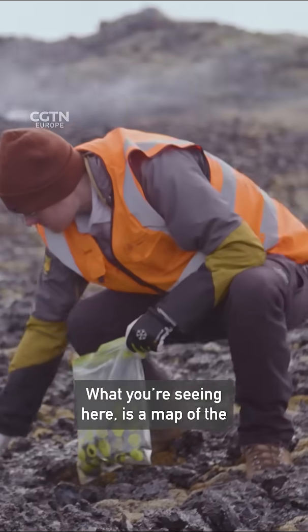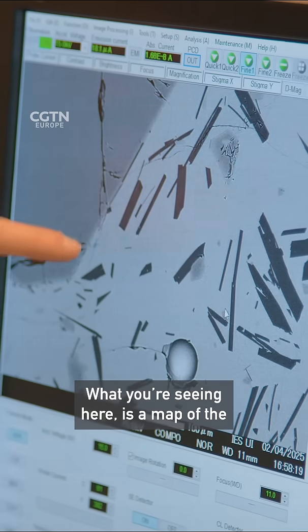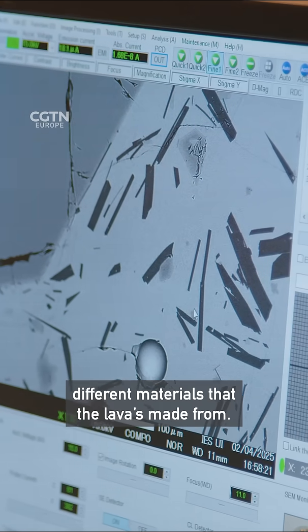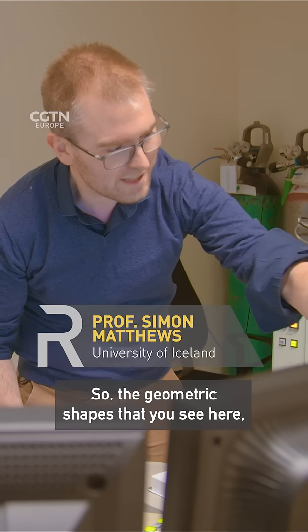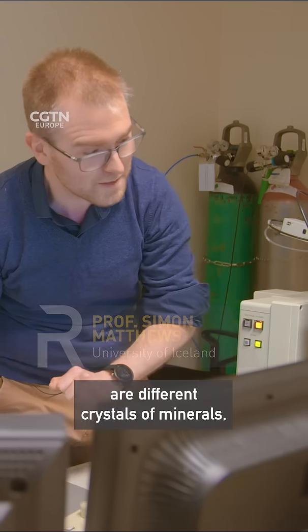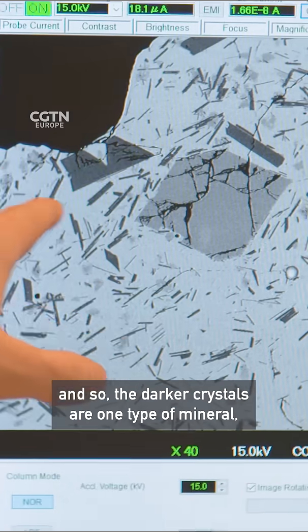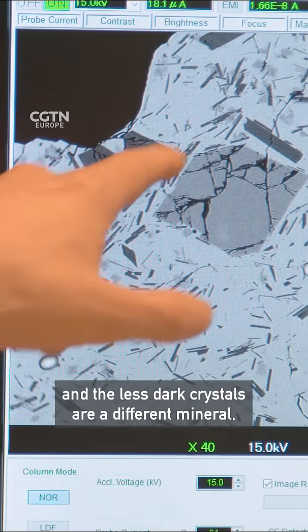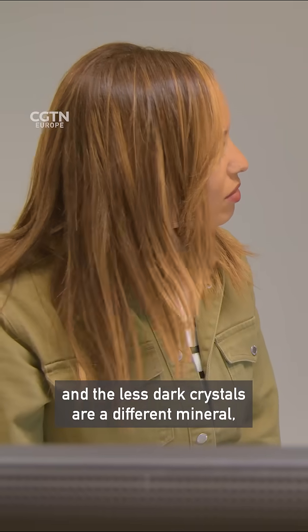What you're seeing here is a map of the different materials that the lava is made from. The geometric shapes you see are different crystals of minerals. The darker crystals are one type of mineral and the lighter crystals are a different mineral.